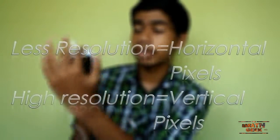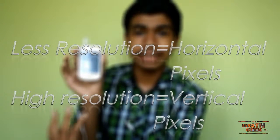First, 240p equals 240 into 320. The vertical pixels are one axis and the horizontal pixels are another. The horizontal pixels are fewer, which is why it is 240p. So 320 denotes the vertical pixels and 240 denotes the horizontal pixels in that 240x320 resolution.